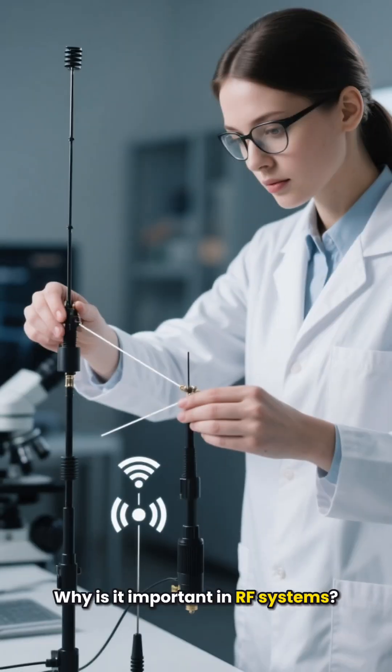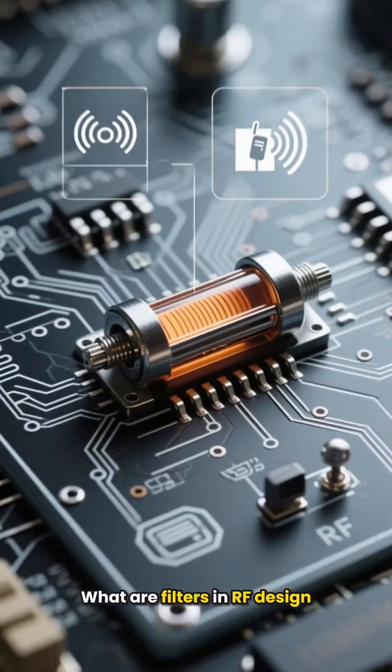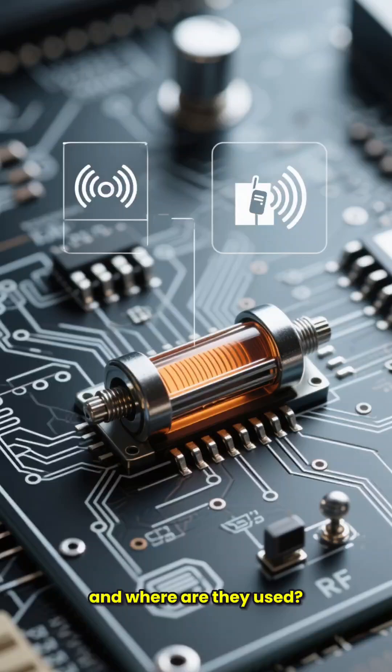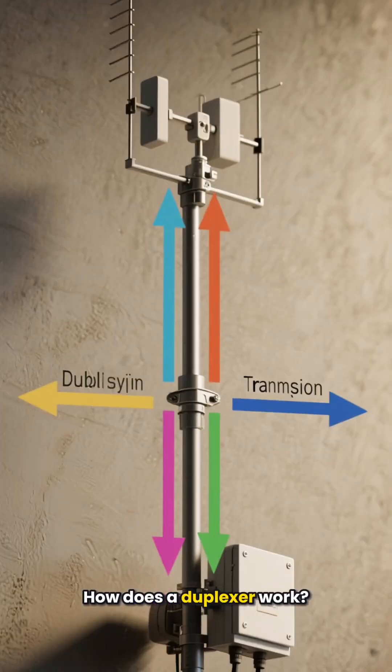Question 13: What is polarization? Why is it important in RF systems? Question 14: What are filters in RF design and where are they used? Question 15: How does a duplexer work?